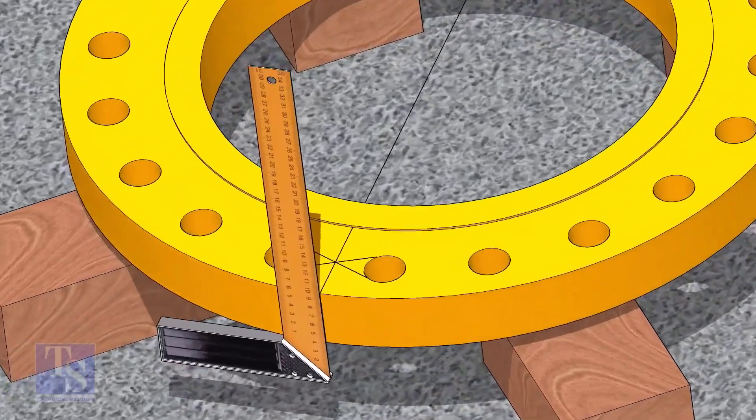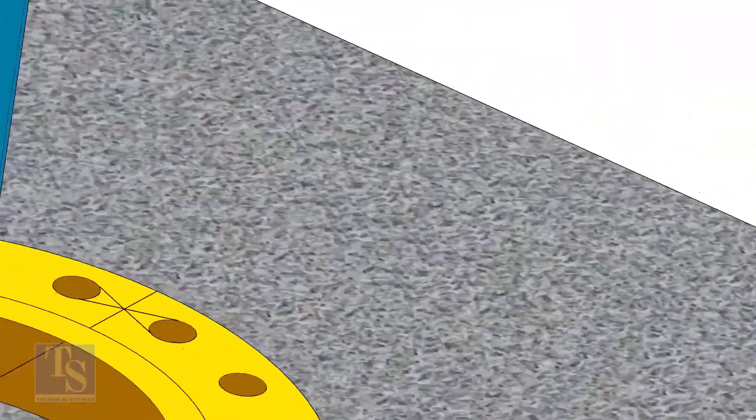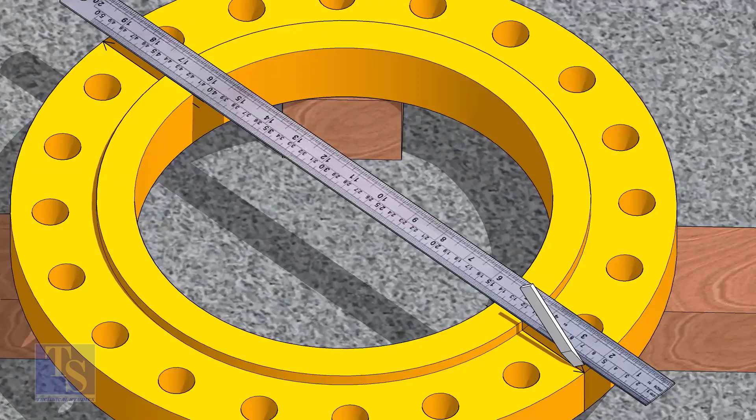Now, transfer the center line to the sides of the flange. Overturn the flange and transfer the center line on the back side of the flange.